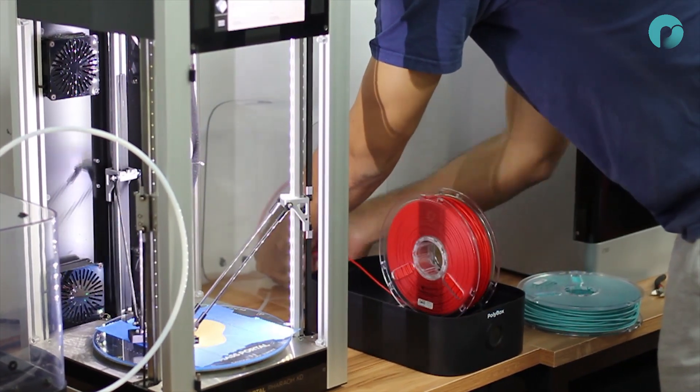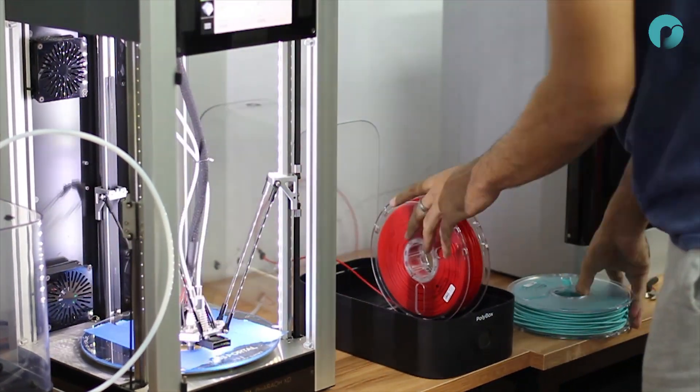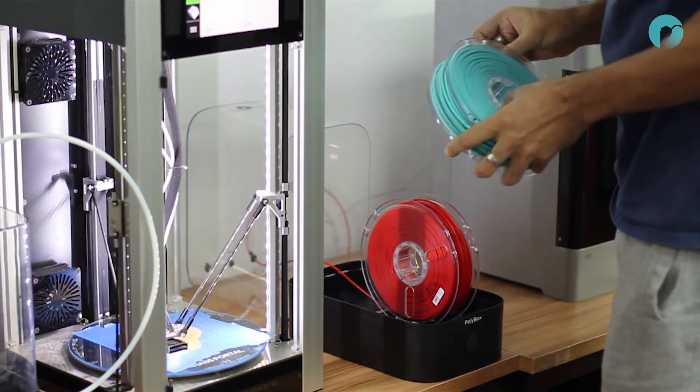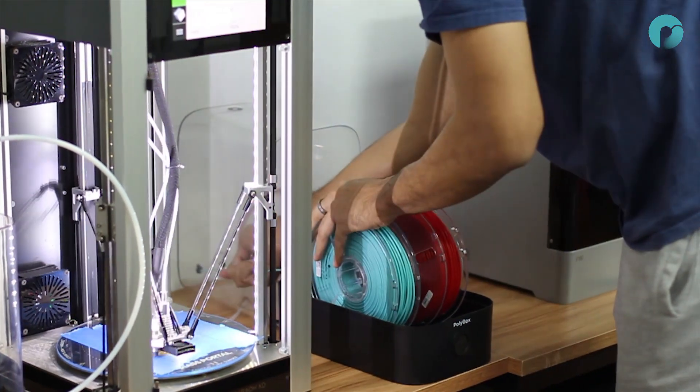Once the tubes are in place, you can open the Polybox and feed the filament through the exit holes. You can now close the box and start printing.